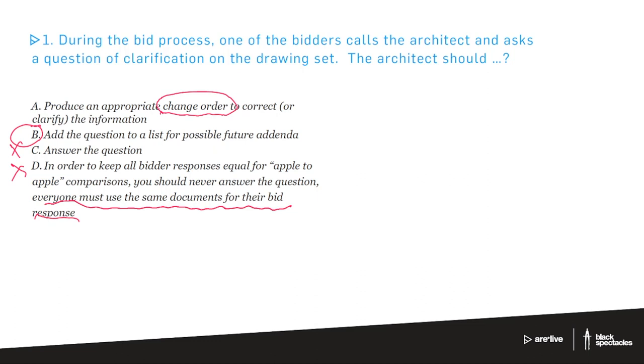And so you only use the term change order once you already have a general contractor already associated with the project. So that means that our answer is B. And so B is, add the question to a list for a possible future addenda. Now, if it's a good question and it's an important question, it might speed the process to creating the addenda. You could send an addenda out with just only one question and one answer. But the concept here is that as an architect, you have put together the bid forms. You've put together the way that you want the contractors to respond.